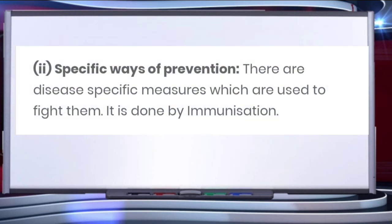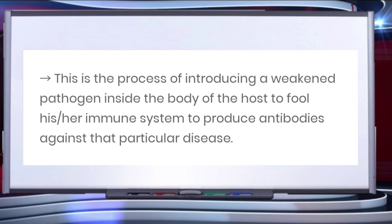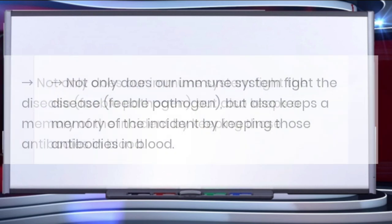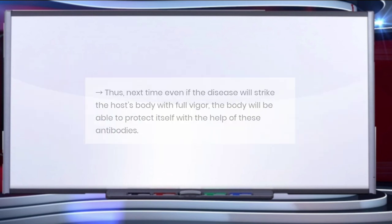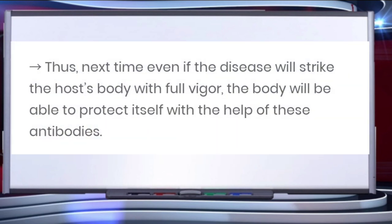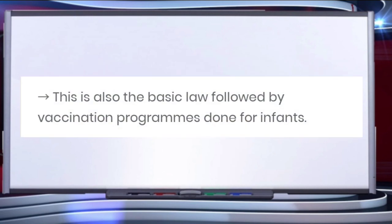The specific ways of prevention are disease-specific measures used to fight against them, done by immunization. Immunization is the process of introducing a weakened pathogen inside the body of the host to fool the immune system into producing antibodies against that particular disease. Not only does our immune system fight the disease, but it also keeps a memory of the incident by retaining these antibodies in the blood. Thus, the next time the disease strikes with full vigor, the body can protect itself using these antibodies produced with the help of the vaccine. This is also the basic principle followed by vaccination programs done for infants.